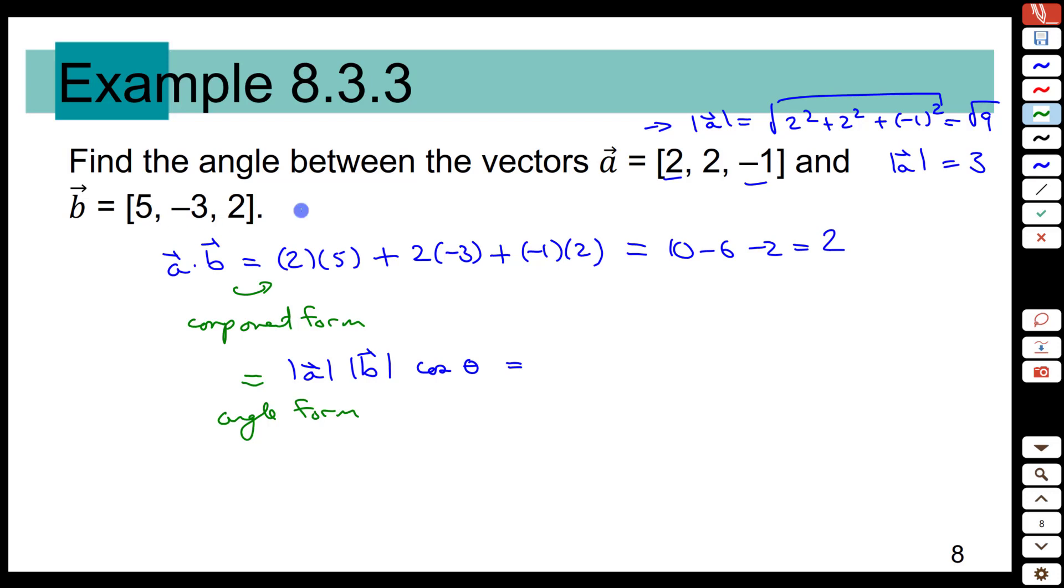And on the other side, the length of b is the square root of 5 squared, plus negative 3 squared, plus 2 squared. That's 25, plus 9, plus 4, all square rooted, which gives us the square root of 38.